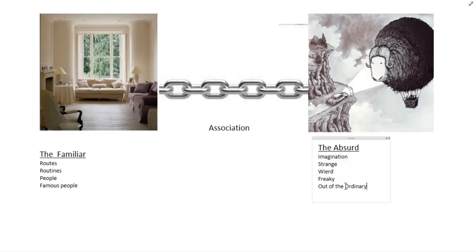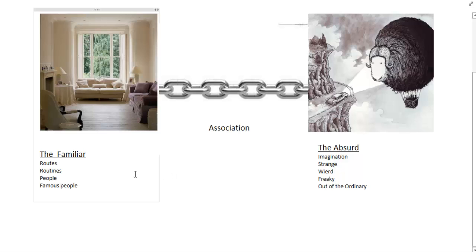So anything absurd, anything you can use by imagining — anything strange, weird, freaky, out of the ordinary. Now you have these two polar opposites: the familiar and the absurd. And what mnemonics does, as we see here in the middle, is it makes an association. Almost all mnemonic systems make an association between the familiar and the absurd, and this is what we're looking for — to take things that are familiar and link them with things that are absurd. This is how you remember. Most systems use this type of thing.